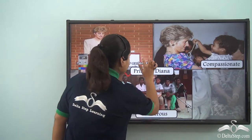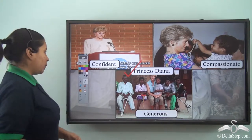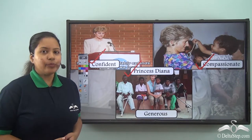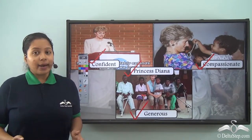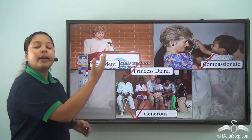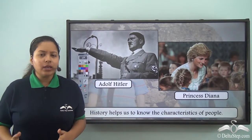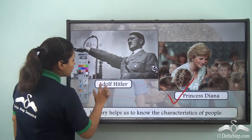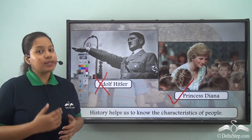Now let's look at another personality — her name is Princess Diana. She was very beautiful and she was also a leader. She was confident and a good speaker. She was very compassionate — that is, she loved to help poor people. And also she was very generous. So these were the good characteristics of this personality. Although she was also a leader, people used to love her because she was confident, compassionate and generous. So we should follow the good characteristics of Princess Diana and not the bad characteristics of Adolf Hitler. Here we saw how we can learn from the characteristics of different people from history.